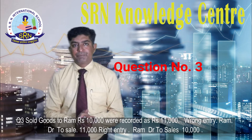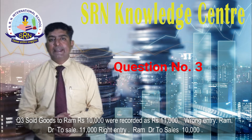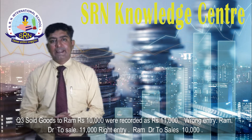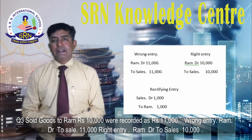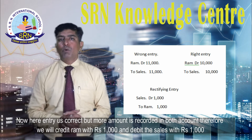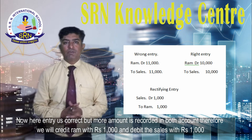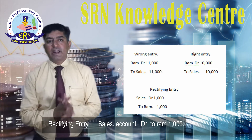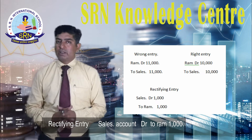Question 3: Goods sold to Ram Rs 10,000 were recorded as Rs 11,000. Wrong entry: Ram account debit to sales Rs 11,000. Right entry: Ram account debit to sales Rs 10,000. The entry is correct but a higher amount is recorded in both accounts. Therefore, we will credit Ram with Rs 1,000 and debit sales with Rs 1,000. Rectifying entry: Sales account debit to Ram Rs 1,000.